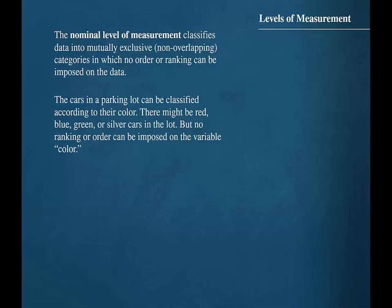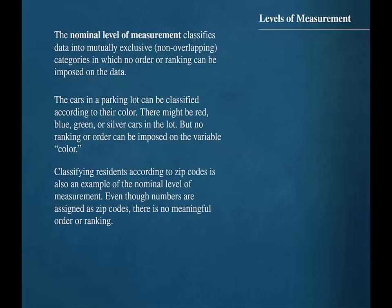The cars in a parking lot can be classified according to their color. There might be red, blue, green, or silver cars in the lot, but no ranking or order can be imposed on the variable color. Classifying residents according to zip codes is also an example of the nominal level of measurement. Even though numbers are assigned as zip codes, there is no meaningful order or ranking.